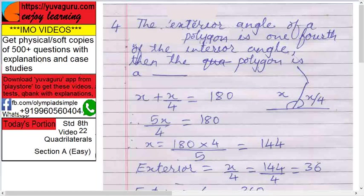Next, the exterior angle of a polygon is one fourth of the interior angle. Then the polygon is a - you have to name the polygon here. Remember this is a polygon. It's going on like this. It can be any shape. So this is the interior angle and this is the exterior angle. Okay, now this is one fourth of x, right? This is x, so this is x upon four. That is what is given. Now we have to find the sides of the polygon and name the polygon.